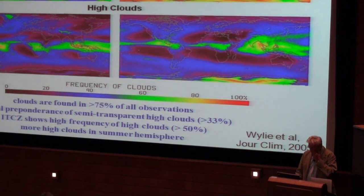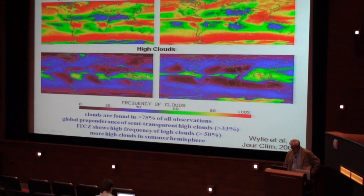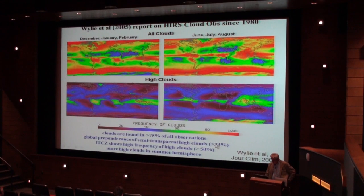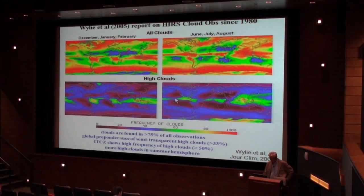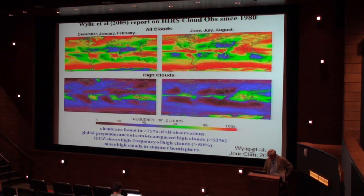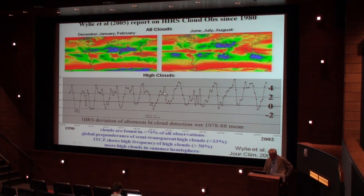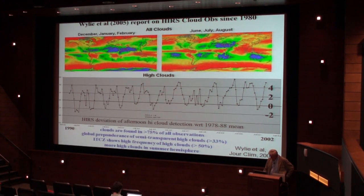Don and I did this work a long time ago. We found a lot of high clouds — more than other sensors. More than one-third of our observations were high clouds, and about three-fourths of the time we found clouds. We published this. We tried to do trends, and with something like 20-plus years we did the deviation with respect to the previous decade's mean. We saw that high clouds seemed to have some sort of an increase — maybe a 2% increase in high clouds over a decade.